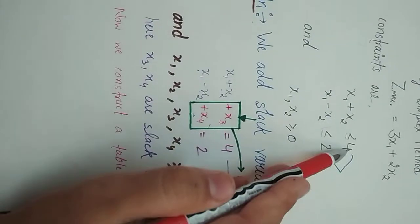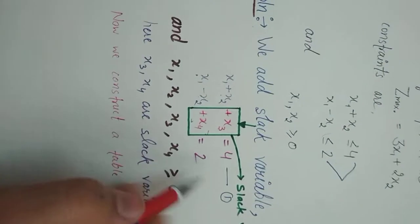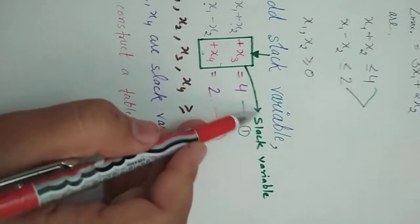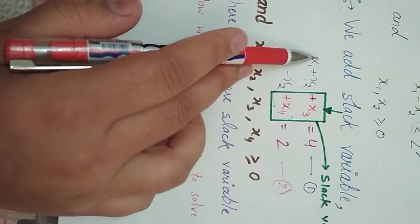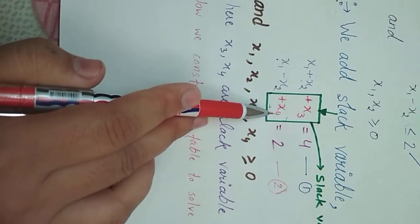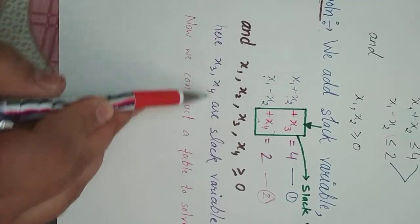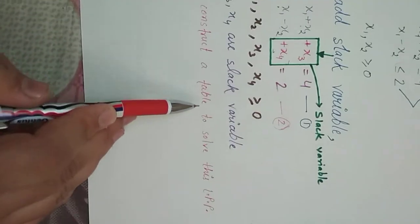The variables x3 and x4 that we add to convert inequalities into equations are known as slack variables. Here x1, x2, x3, and x4 are all greater than or equal to 0, where x3 and x4 are the slack variables. Now we construct a table to solve this LPP.